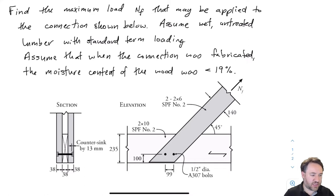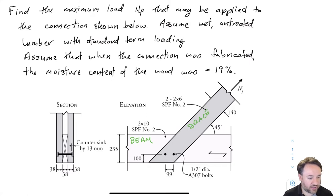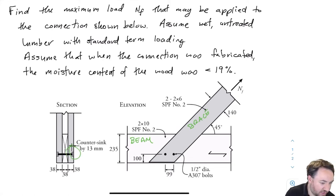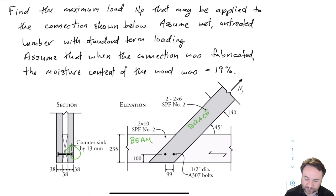One side, which has just the beam, I'm going to label as the beam, and the other side which has the two parallel braces, one on either side of the beam. You can see that the bolted connection has a countersink right here, so that's going to affect our thickness calculation when we go to calculate the thickness of the brace. There are two bolts and we're assuming a wet untreated condition with a standard term loading, so our KD is going to be equal to 1. We're also assuming the moisture content of the wood was less than 19% when the connection was fabricated, which will affect our KSF factor, the service condition factor for fasteners.